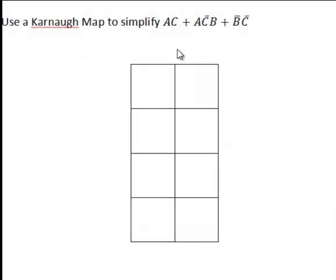Let's look at how we would use a Karnaugh Map to simplify the following Boolean expression: AC plus AC bar B plus B bar C bar. This, for instance, might represent a switching circuit with three types of switches A, B and C.